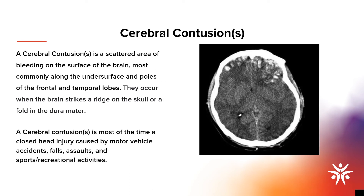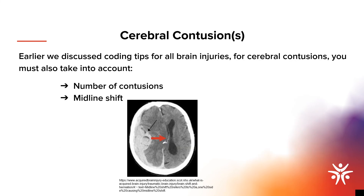The next traumatic brain injury is a cerebral contusion, which involves scattered areas of bleeding on the surface of the brain. This typically occurs in the frontal and temporal lobes after the brain strikes a ridge of the skull or a fold in the dura mater. Cerebral contusions are most often a closed head injury caused by motor vehicle accidents, falls, assaults, and sports and recreational activities. For cerebral contusions, you must also consider how many contusions there are and if there is a midline shift — a shift or displacement of brain tissue across the center line of the brain as seen in imaging.